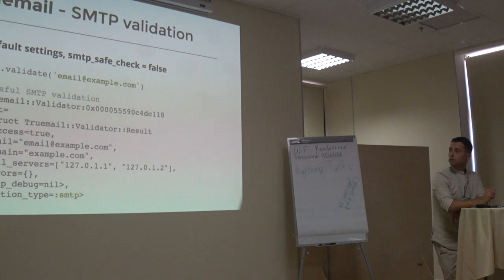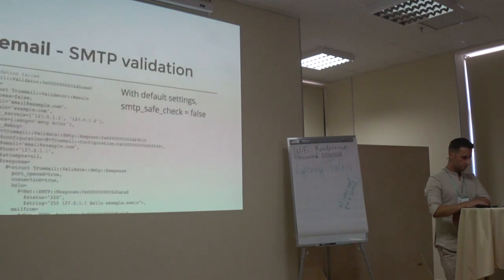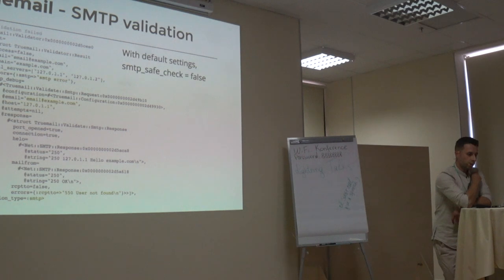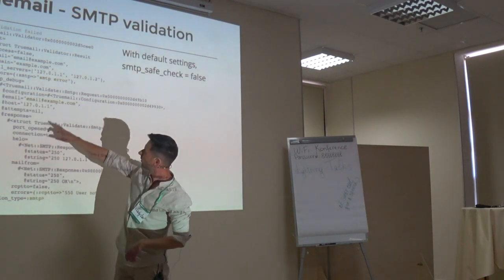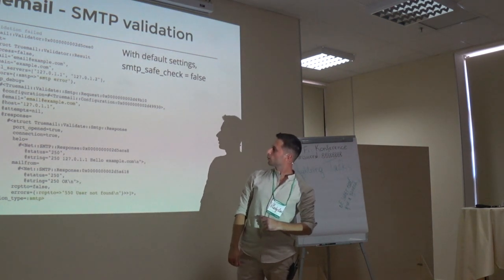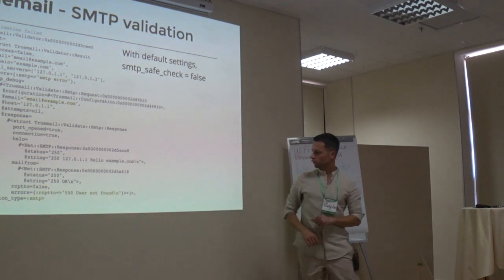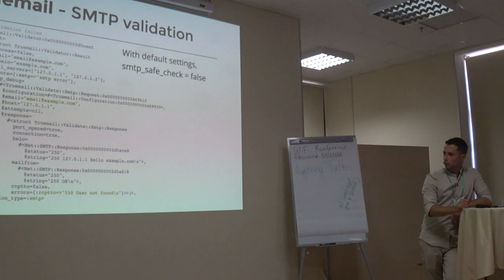This is an example of successful SMTP validation. There are no SMTP errors found. But what is SMTP safe check option? By default it is equal false and means that if any SMTP errors will be detected, the validation will be failed. Here you can see an example of case where SMTP validation failed. All request instances with SMTP errors you can find in SMTP debug. This error and the SMTP debug instance of Truemail validation request. And the error is 550 status code.